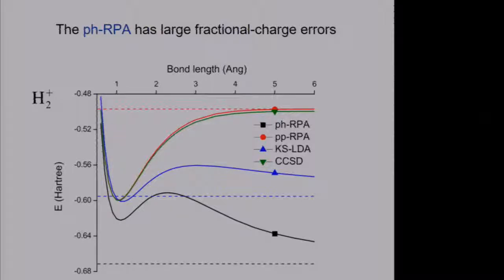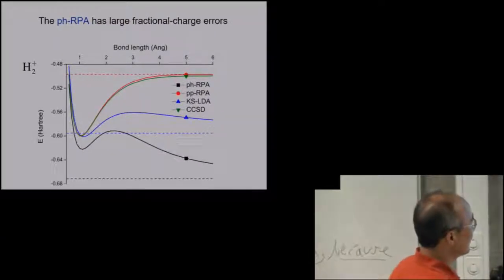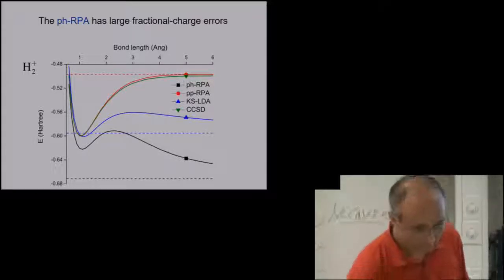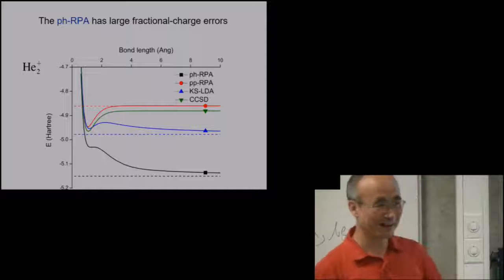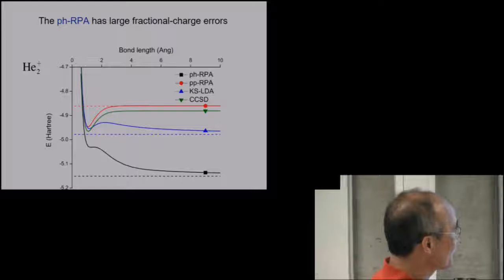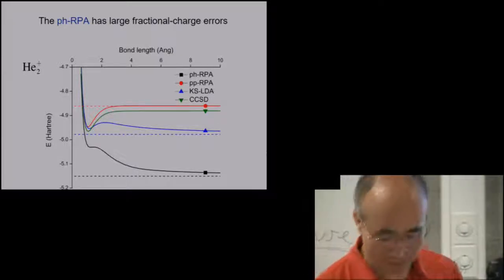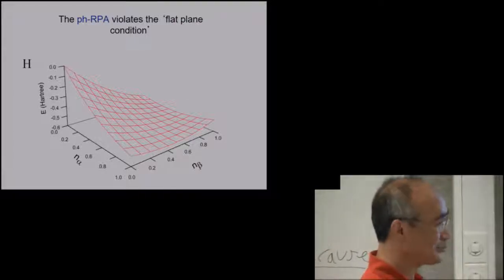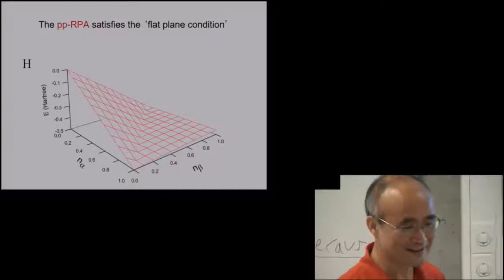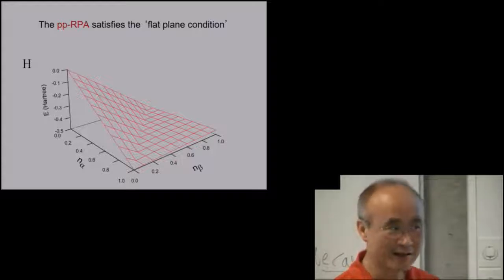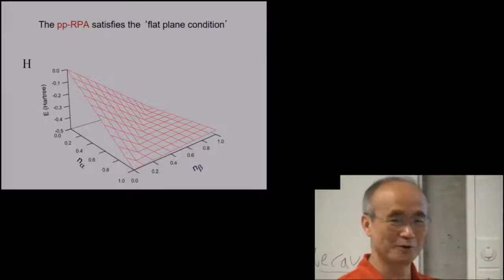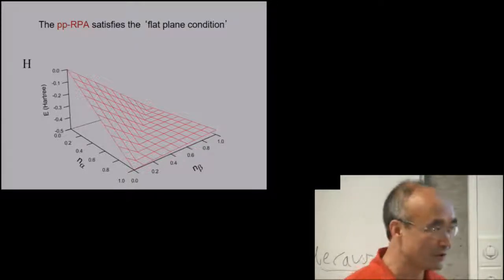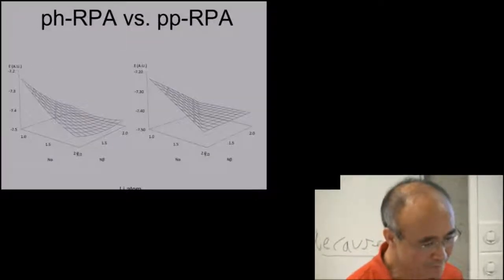If it satisfies the linearity condition, it should dissociate H2+ very nicely. H2+ performs very well for PP-RPA and really badly for PH-RPA — PH-RPA is even unbound, as is LDA. For the flat plane condition, normal PH-RPA shows no flat plane — just a continuous curve. PP-RPA is really beautiful. This is the first functional we have found that truly agrees with the exact flat plane condition we derived. PP-RPA is the first one to satisfy this condition.